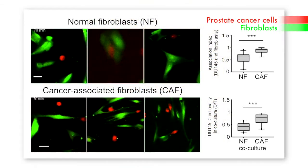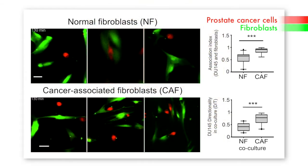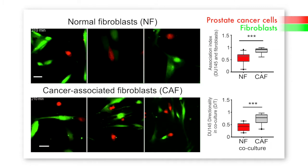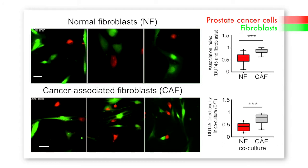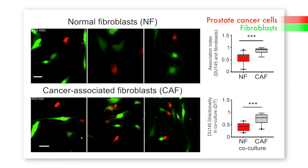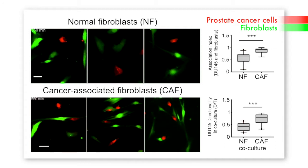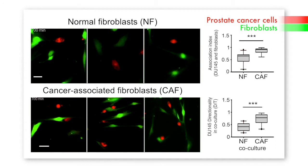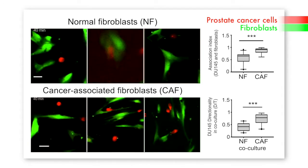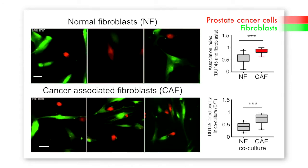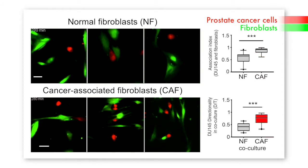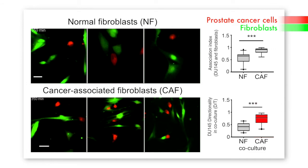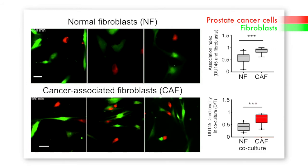When they co-cultured cancer cells with normal fibroblasts, the cells would just migrate randomly around the microfluidic devices they used, instead of interacting with the fibroblasts. But when they co-cultured cancer cells with cancer-associated fibroblasts, the cancer cells tended to associate with them more — they migrated towards the CAFs, and when they reached the CAFs, they would migrate along the axes of the CAFs.